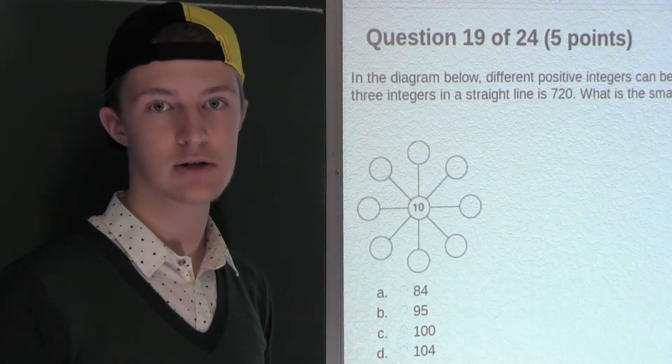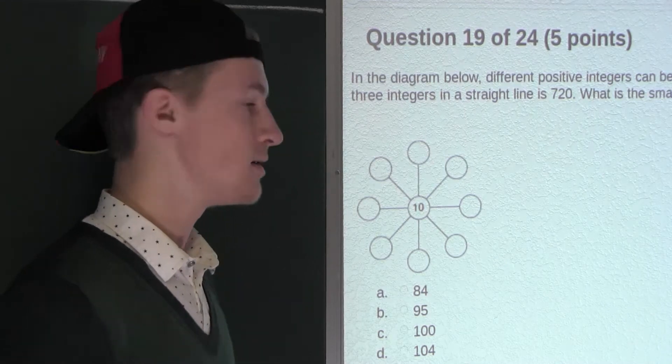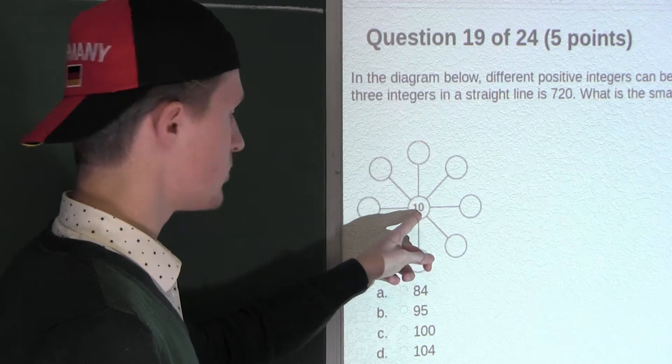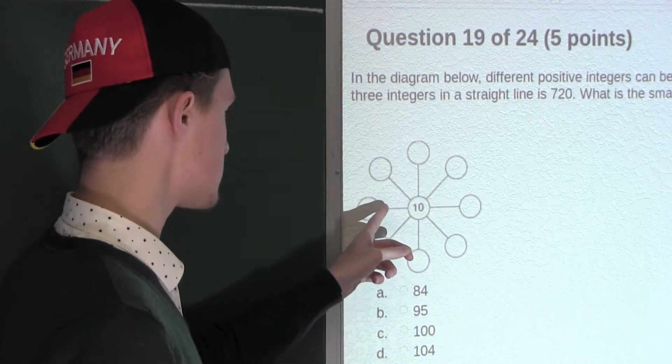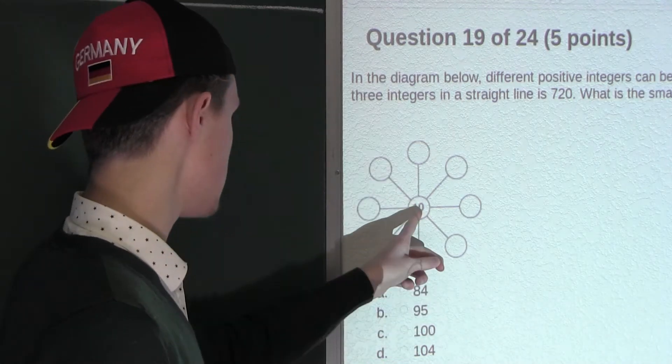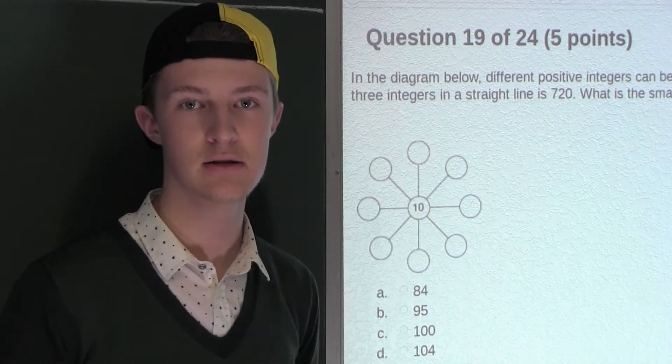And also in each one of those 4 products of 720, one factor is 10, which means that the other 2 numbers in all those 4 products must multiply out to 720 divided by 10, which is 72.